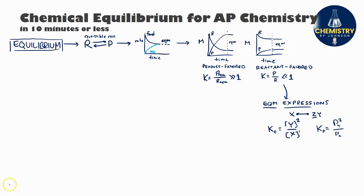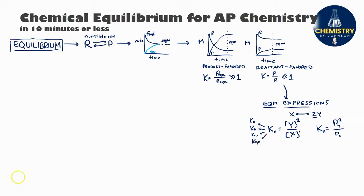In either type of expression, we exclude any solids and any liquids. In AP Chemistry you'll encounter many other types of Kc's, like Ka (the acid dissociation constant), Kb (the base dissociation constant), Kw (the equilibrium constant for the autoionization of water), and Ksp, which we'll talk about later. It's important to remember that even though there are all these different versions, they're all just different types of Kc expressions and follow the exact same rules.